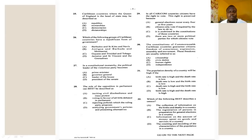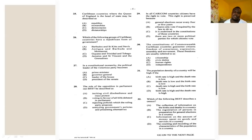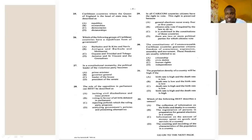Number twenty-eight says: the role of the opposition in parliament can best be described as — A: inciting civil disobedience, B: voting in favor of bills, C: rejecting policies the ruling party proposes, or D: analyzing government's policies and presenting alternatives. The opposition's main role is to keep the government in check — analyze what they put forward and, if they think it won't work, present alternatives. The answer for number twenty-eight is D.